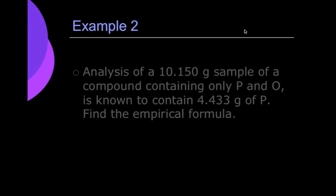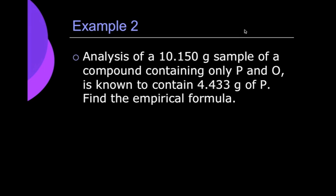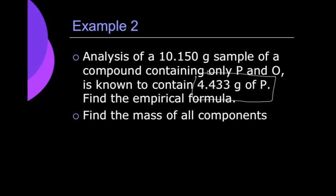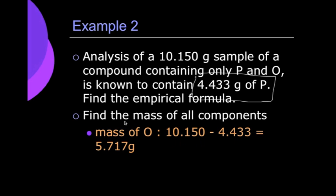Okay, so in our next example, we see analysis of a 10.15 gram sample of a compound containing phosphorus and oxygen that's known to contain 4.433 grams of phosphorus. We find the empirical formula. So we have the mass of phosphorus. Now all we need is the mass of oxygen. So to do that, we just subtract it. We see that now we have both masses. So we have the mass of oxygen. We have the mass of phosphorus. And all we do is just pick up with our next step of changing that into moles.